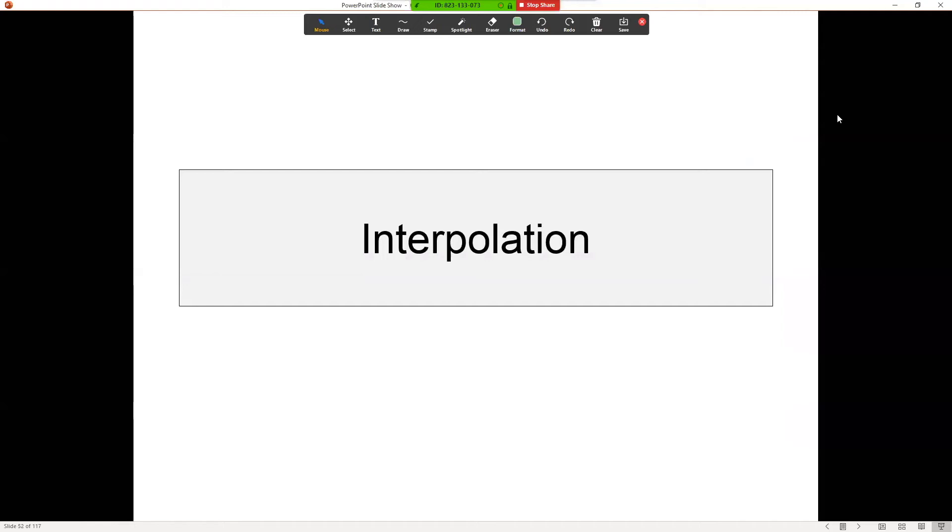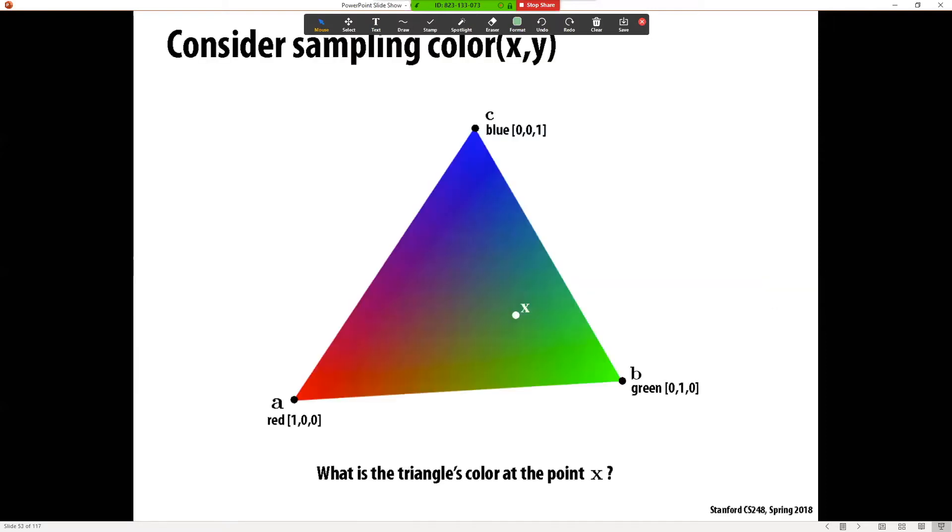So let's continue topics. Now we're going to move on to interpolation. I've used this word and sometimes people have asked what does this word mean. Here's the idea for interpolation: I have a triangle or some other object, I know that at points a, b, and c, they're red, green, and blue. What is the color at x? How am I going to figure that out? That's what we mean by interpolation.